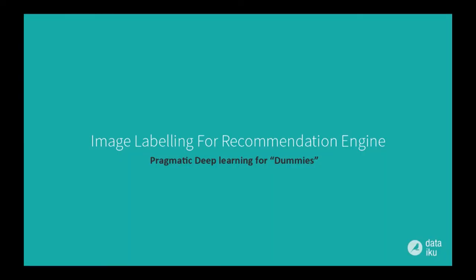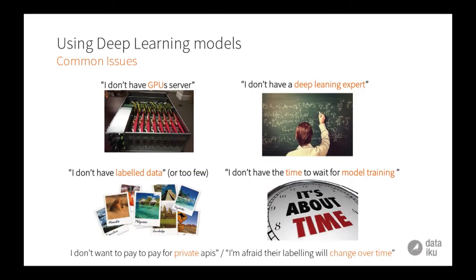Here are the common issues a company will face if they want to do deep learning for image labeling. First, they'll say: I don't have the architecture, I don't have the GPUs. Then probably they'll say: I don't actually have someone able to work with deep learning. Probably don't have the time to wait 72 hours to train the model either. And especially what's really important is: often I don't have any labelled data, or at least my data is not really correctly labelled. All of the images are labelled as Ski, but that's no use in my recommendation engine.